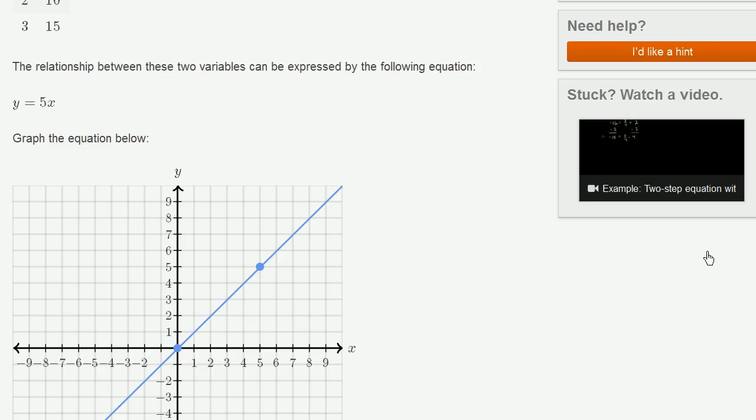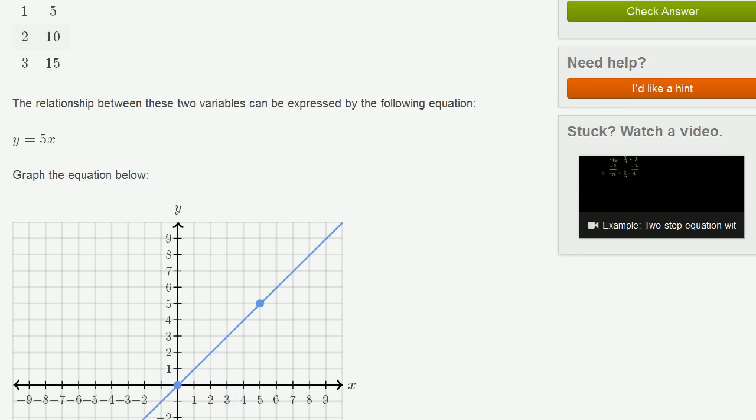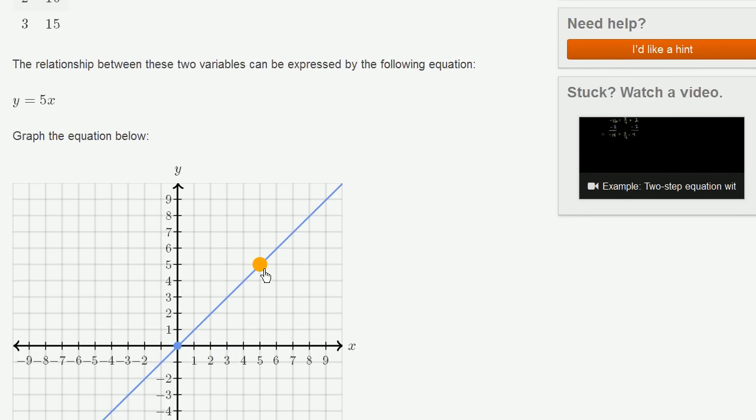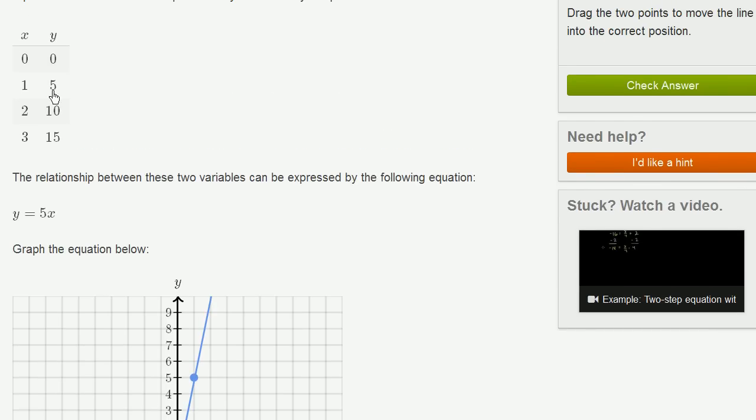And then if I get one question right, and the table tells us that, or we could logically think about it, every question I get right, I'm going to get five more points. So if I get one question right, I'm going to get five more points. And we saw that in our table as well. We saw that right over here. One question, five points.